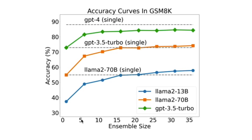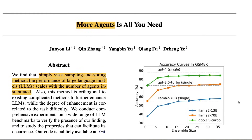As you increase the number of models — or as they call it, the number of agents in the model ensemble — accuracy increases. The paper explores how they went about it, what models and sizes were used, and what dimensions move this needle. You can see three different families of models: LLaMA 2, GPT-3.5 Turbo, and GPT-4.